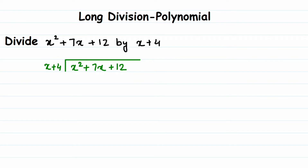Now here are the steps to remember for every step going forward. The quotient is found by dividing the first term of the dividend by the first term of the divisor — we're going to do this for every step. So here the first term is x squared, and x squared divided by x: you can cancel one x, and we get x. So x is the first term of the quotient.